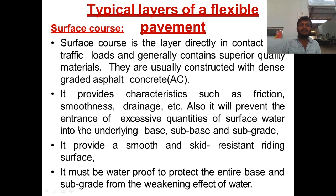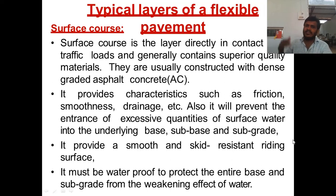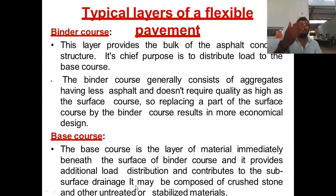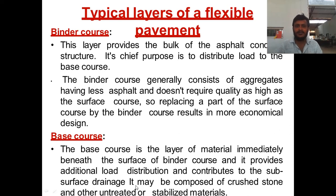The surface course also prevents excessive quantities of surface water from entering the underlying base, sub-base, and subgrade. It is made waterproof by the seal coat, preventing water percolation. It provides a smooth and skid-resistant riding surface and must be waterproof to protect the entire base and subgrade from the weakening effect of water.